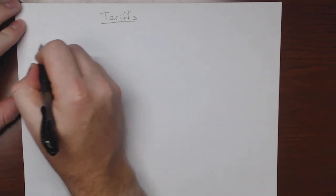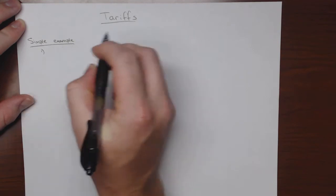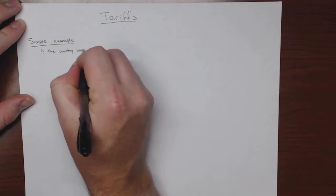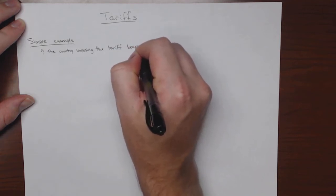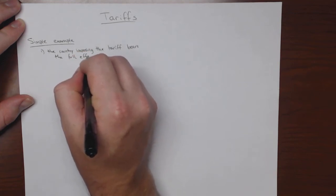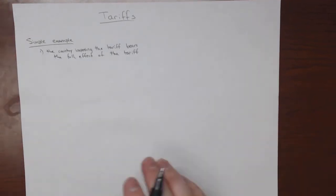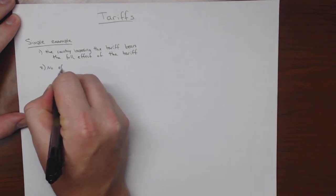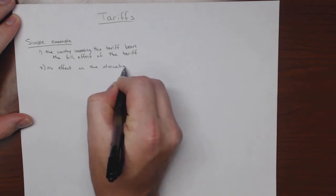We're going to start with a simple example and just build from there. The simple example is one where the country imposing the tariff bears the full effect of the tariff. We're going to start with a really simple example where the country only affects the domestic market and has no effect on the international markets.